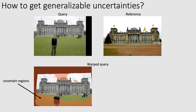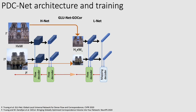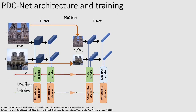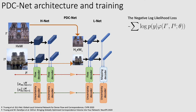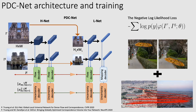While the previous approach produced inferior results, our approach leads to much better uncertainties. We obtain the PDCNet architecture by adding our uncertainty decoders in GluNet GoCore. We train our network using the negative log-likelihood loss as the only objective on both self-supervised data and sparse ground-truth data.